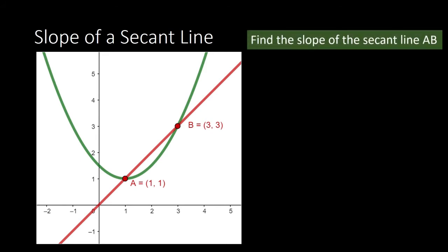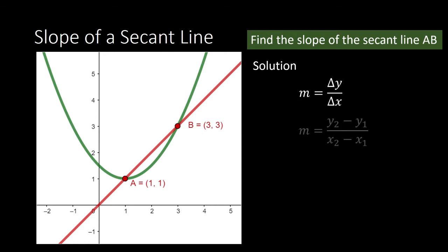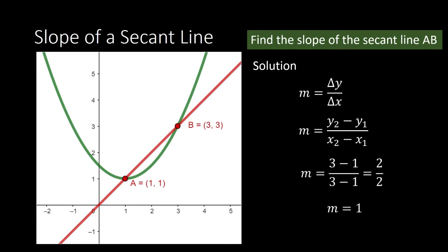Find the slope of the secant line AB. The slope is equal to change in y over change in x. So it's going to be 3 minus 1 divided by 3 minus 1, which is equal to 2 over 2, or it is equal to 1. The slope of line AB that passes through points A and B is equal to 1.